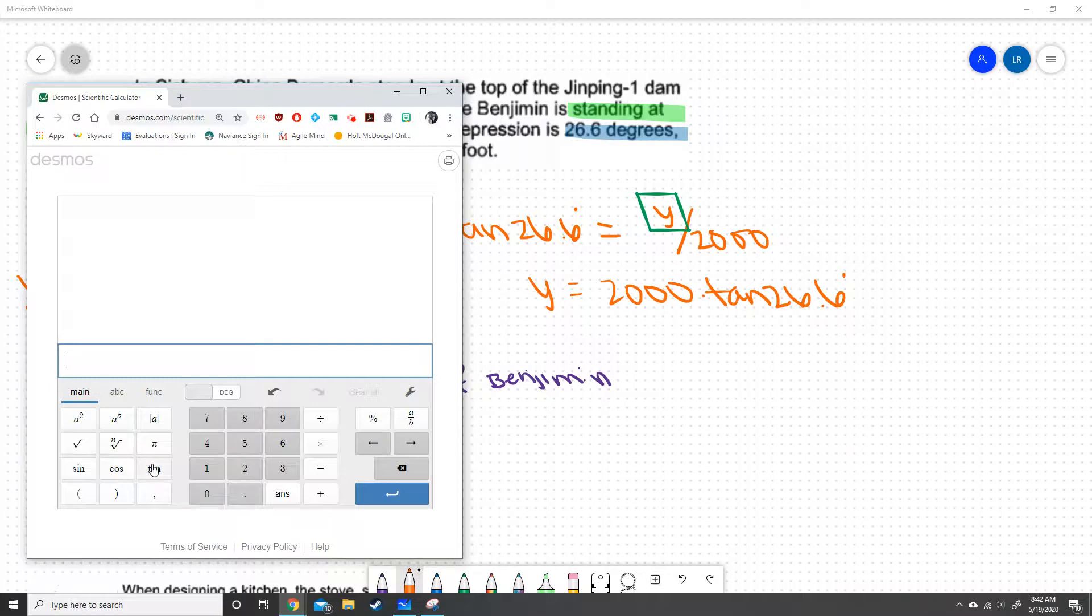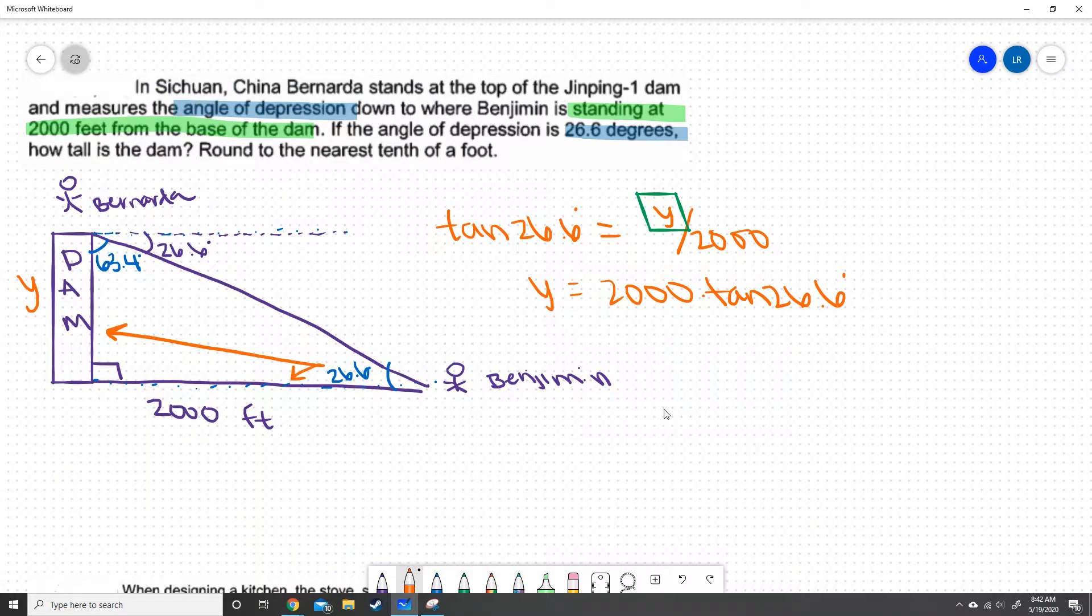We're going to want to say the tangent of 26.6, and we're going to multiply that by 2,000. And we get that the height of the dam is 1,001.5 feet.